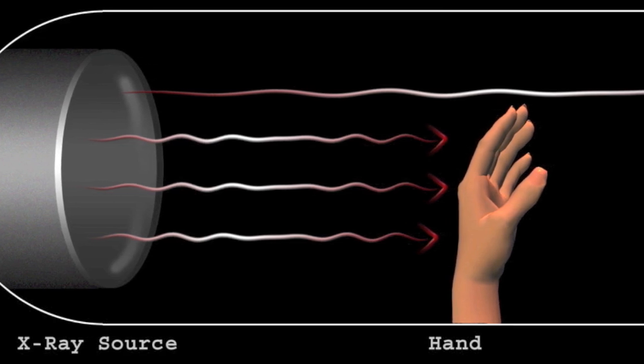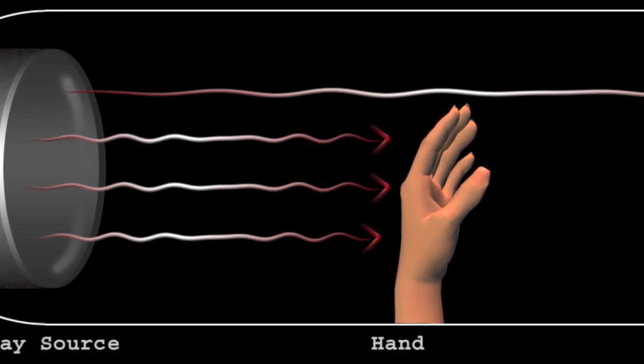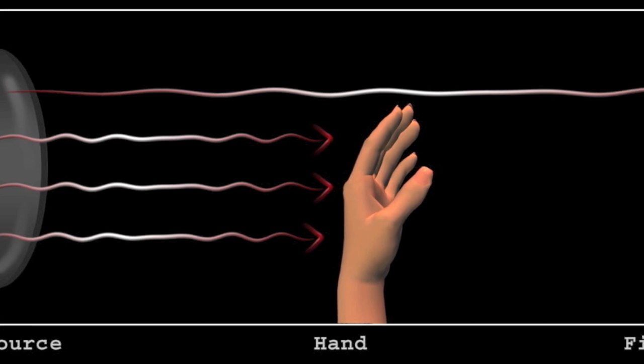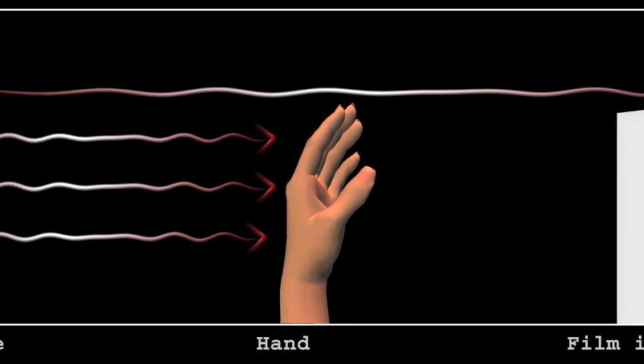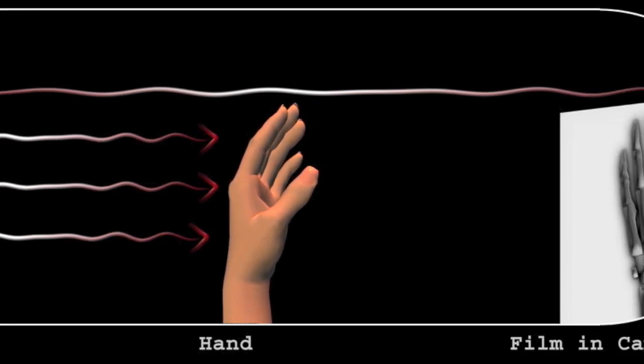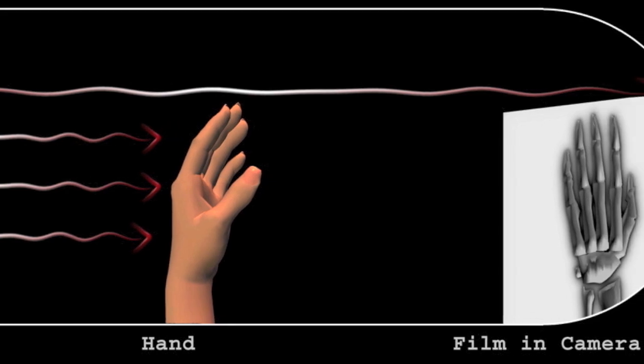Much like a medical X-ray, where denser material blocks out a beam of X-rays from a source from behind it and an image is formed on film or a CCD, Titan blocked out part of the X-rays coming from the Crab Nebula.